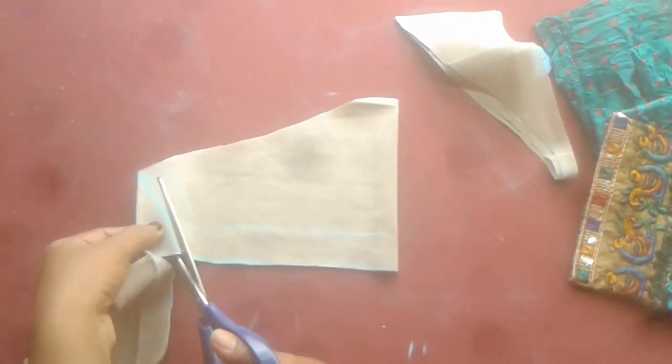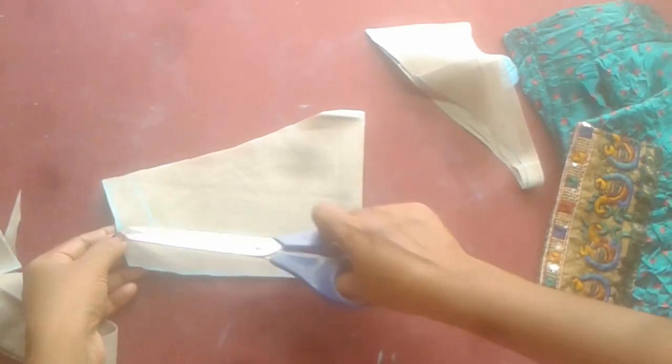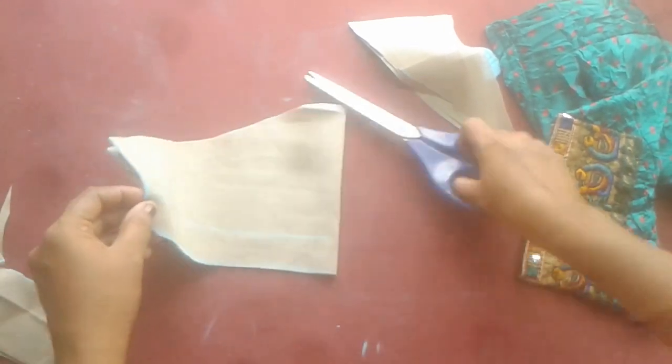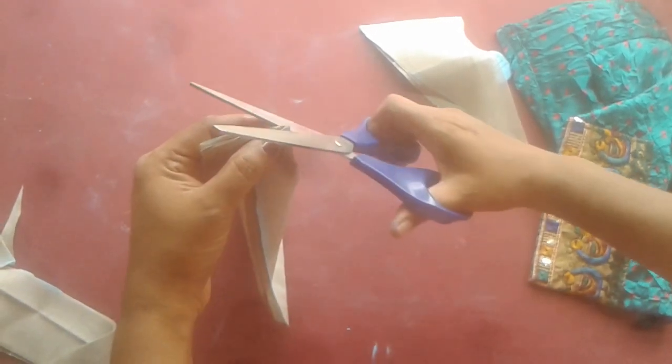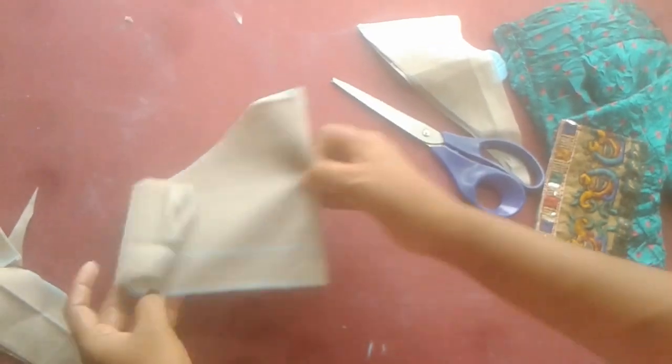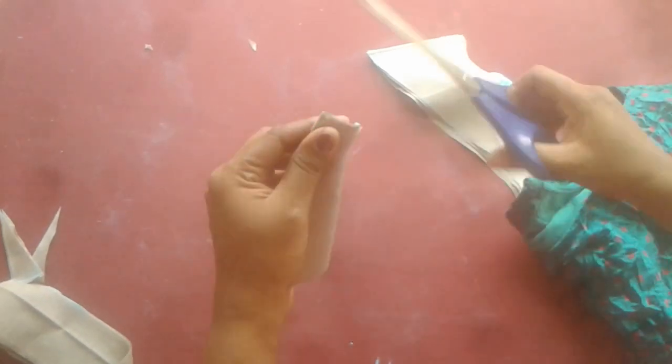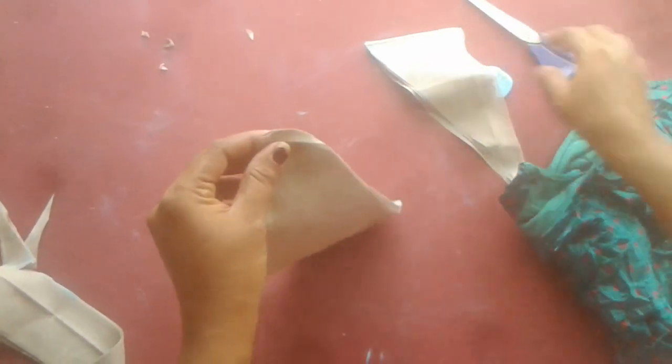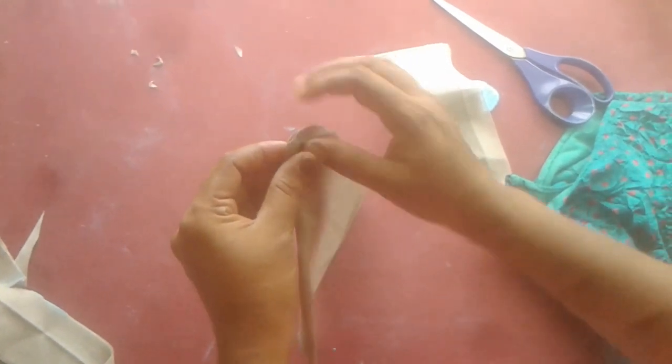Then we cut the blouse and repeat the pattern for the length to make the blouse finish. We cut starting with the blouse, then we cut the blouse to the shoulder. I cut this down.